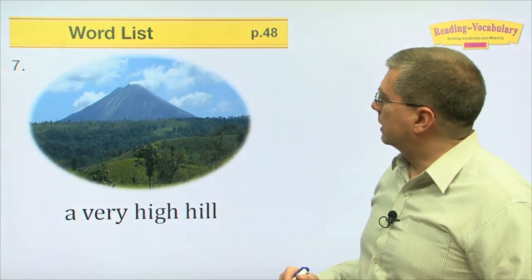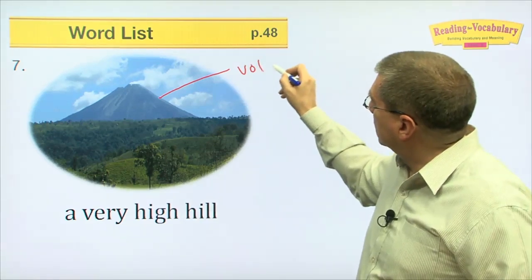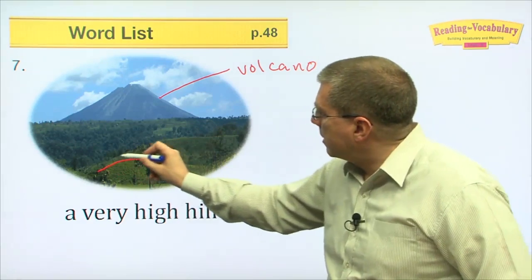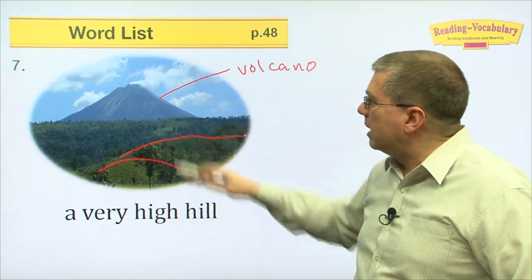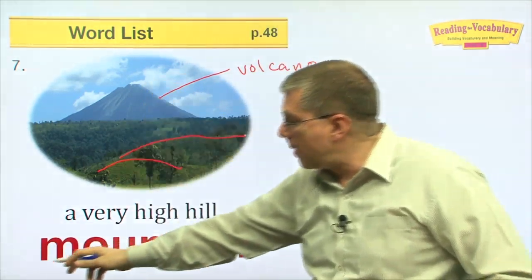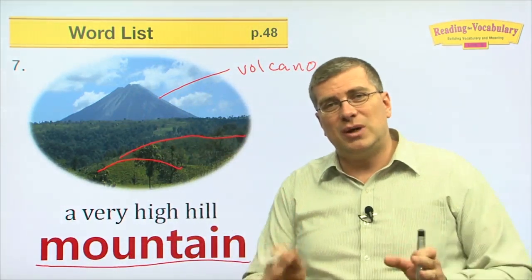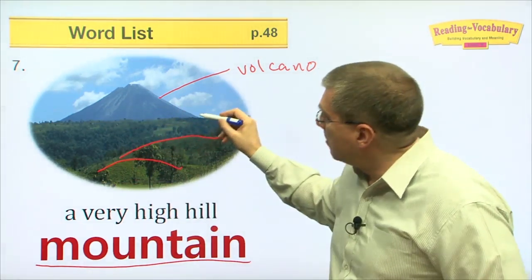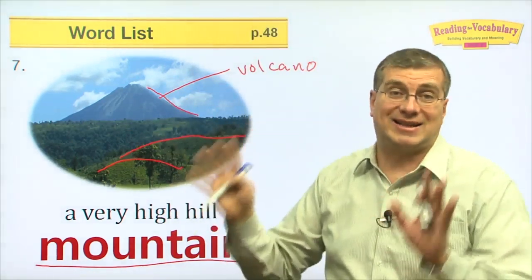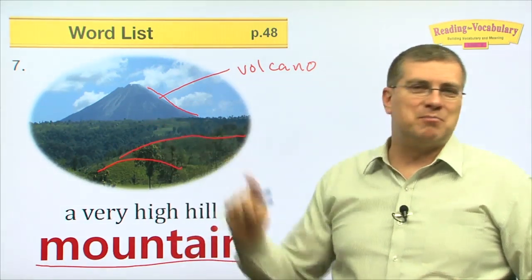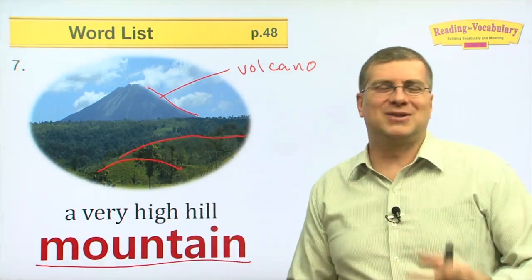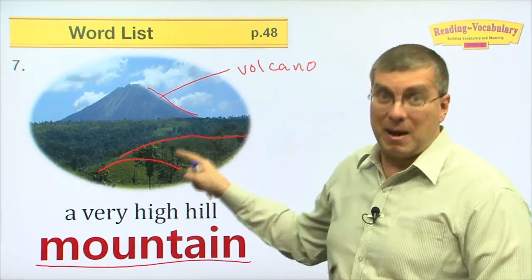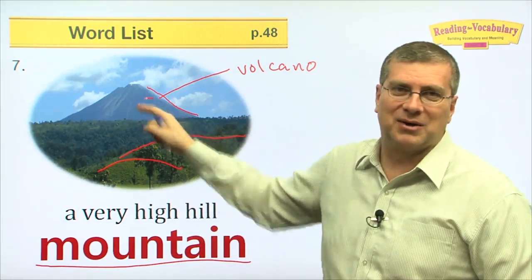Number seven — this is a volcano, a very high hill. It's interesting because small hills are not very high, but if you look at a mountain, that's really, really high. The difference between a hill and a mountain: hills are small and not that tall, but a mountain is really steep and really high. Some people argue about what counts as a mountain — it depends on where people are from. If somebody's from a very flat place, they might think a small hill is a mountain.